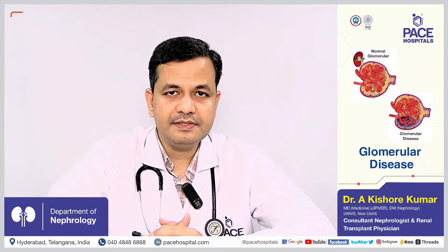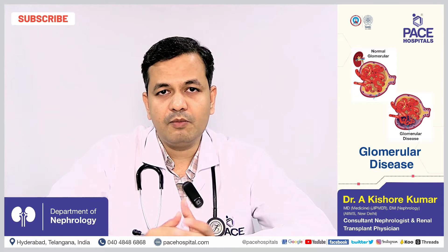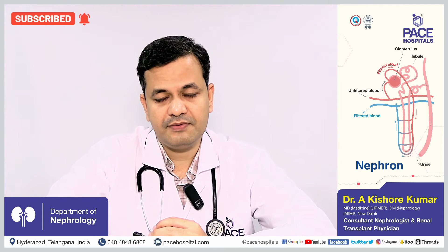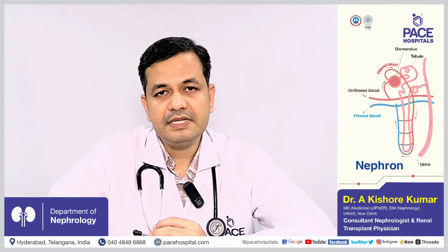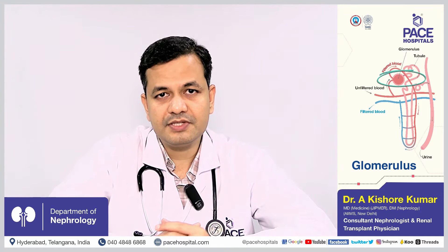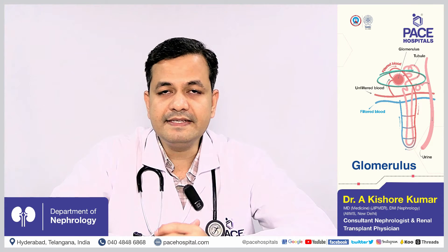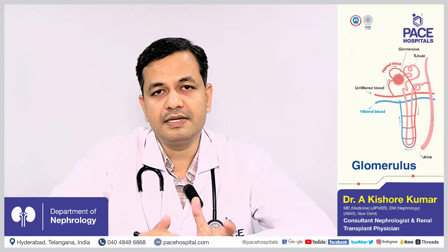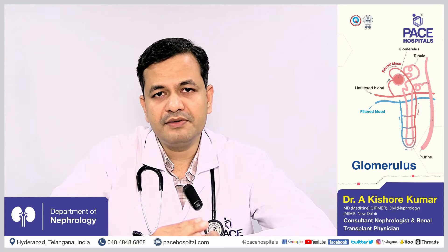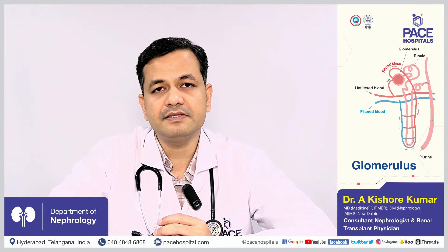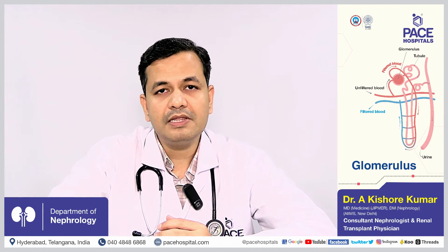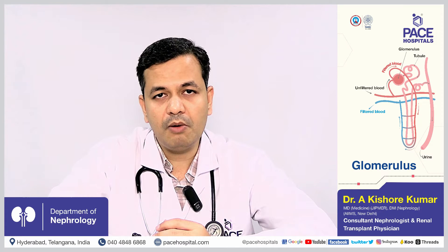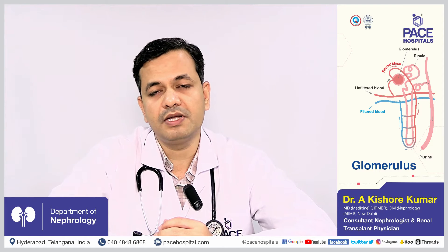Inside our kidneys — two in number — there are 10 lakh small units called nephrons. In each nephron there is a small globular or circular structure called the glomerulus. Diseases which affect this glomerulus are called glomerular diseases, and there are many different conditions which can affect it. Out of all glomerular diseases, IgA nephropathy is the most common condition affecting the glomerulus.